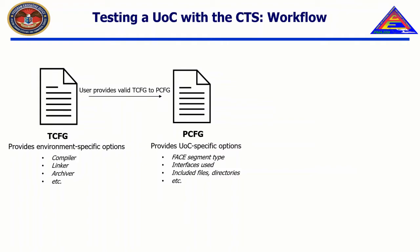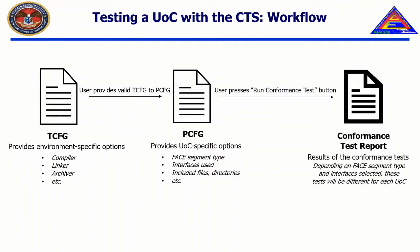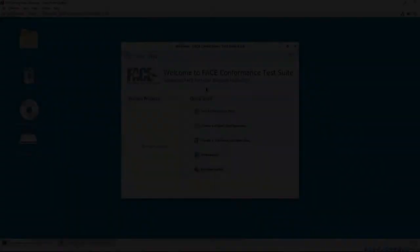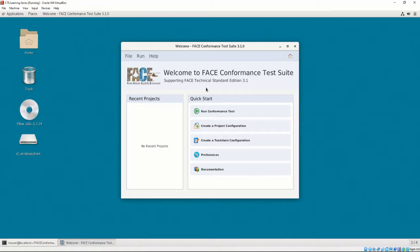A valid toolchain is required to be included when creating a project configuration file. Thus, the UOC testing workflow starts at defining a valid toolchain configuration, then defining a valid project configuration, and then testing the UOC for FACE conformance, which produces a FACE conformance test report. This workflow and graphical user interface is identical in CentOS 7 and Windows 10. For the purpose of this and all subsequent videos, we will be demonstrating the CTS on CentOS 7. All steps may be replicated on Windows 10, unless otherwise noted.